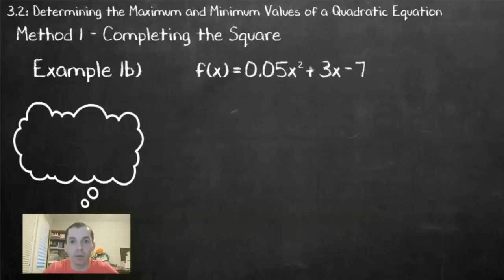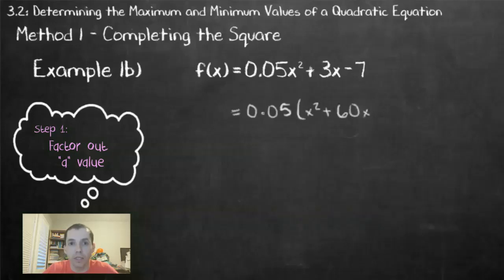In this second example, again we have an equation in standard form, f of x equals 0.05x squared plus 3x minus 7. Again, we're going to complete the square to convert to vertex form. Our first step, again, is to factor out that 0.05, the a value, which leaves us with x squared plus 60x inside brackets. Negative 7, the c term, does not change.